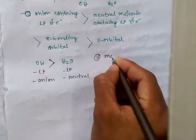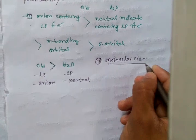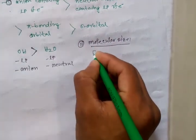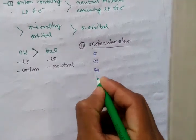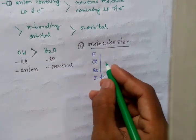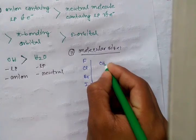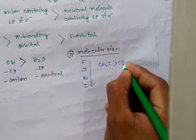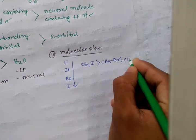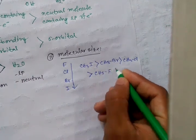The second criteria for polarizability is molecular size. As molecular size increases — for example, fluorine, chlorine, bromine, iodine — the extent of polarizability increases. So CH₃I is more polarizable than CH₃Br, which is more polarizable than CH₃Cl, which is more polarizable than CH₃F.